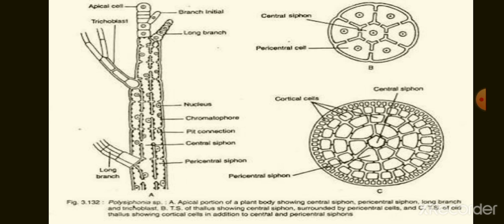Next, the transverse section of the branch. In the transverse section of the branch, the central portion is occupied by the central siphon. The central siphon is surrounded by many pericentral siphons. From the pericentral siphons arise many cortical cells. All the cells are connected with each other by cytoplasmic connections or pit connections.